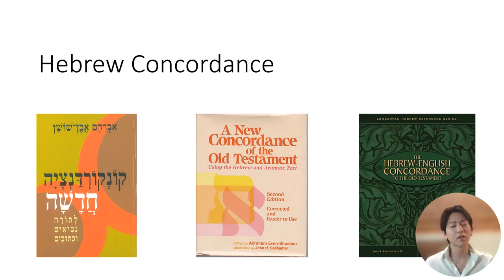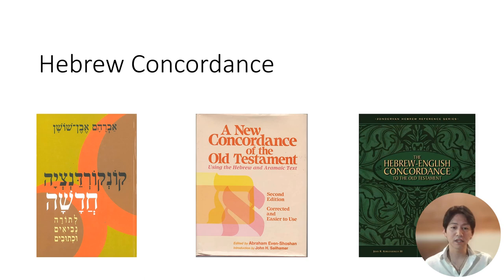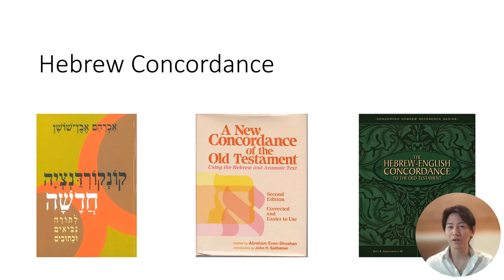Doing a word study, however, is more than simply looking up a word in a dictionary. In fact, when you're doing a word search, one of the most important things is to look up every occurrence when a certain term, phrase, or idea occurs. You can do this by owning a concordance. The most standard academic Hebrew concordance is the one done by Evan-Shoshan, but this one is in Hebrew, so it's usually inaccessible for English-speaking students. Other more accessible concordances are the New Concordance of the Old Testament edited by Evan-Shoshan, and the Zondervan Hebrew-English Concordance of the Old Testament. Both are easy to use and will give you all the information you need as to when a certain term occurs and where you can find those references.